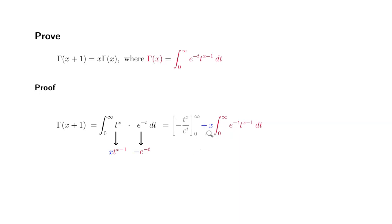Then what we have is x times this integral, which is the exact definition of gamma of x. So therefore, we're going to get x times gamma of x.